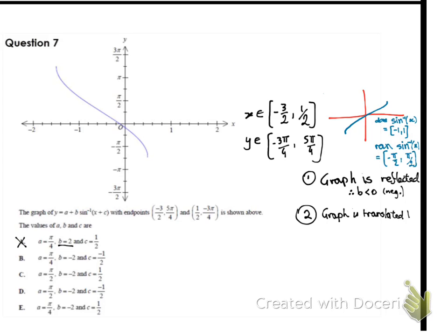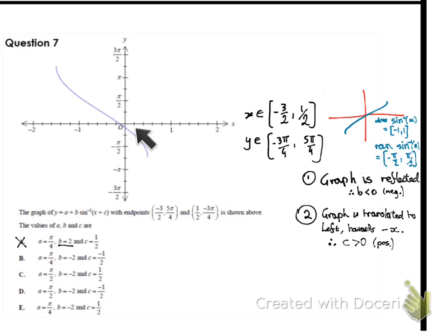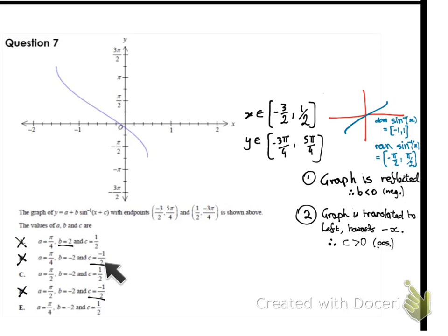What else is happening to the graph? The graph is translated to the left — shifted in the negative x direction. The normal standard graph is centred around zero, but now the centre has been shifted left. A shift to the left means the c-value inside the bracket must be positive. That cancels out options B and D because their c-values are negative.